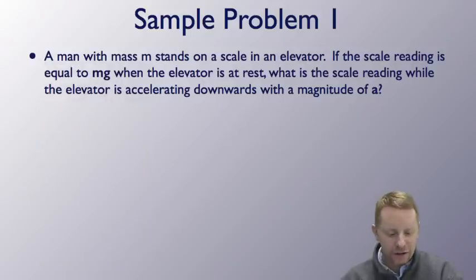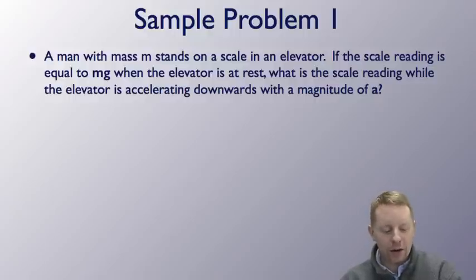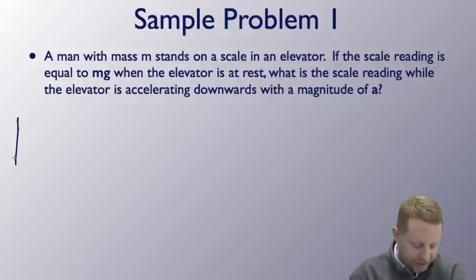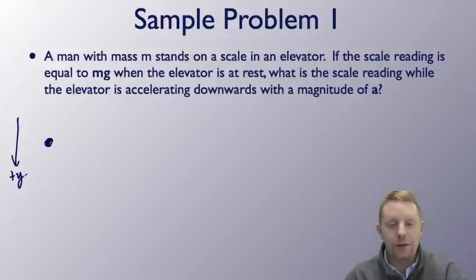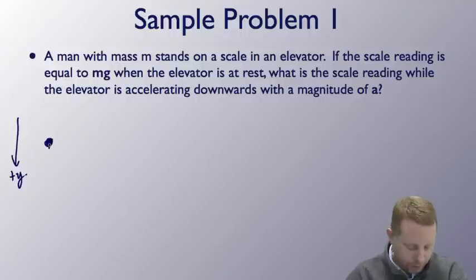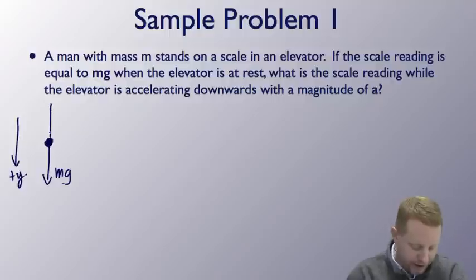Let's take a look at a sample problem. A man with mass m stands on a scale in an elevator. If the scale reading is equal to mg when the elevator is at rest, what is the scale reading while the elevator is accelerating downwards with magnitude a? If it's going to move downwards, let's set up our axes — we'll call down the positive y direction — and draw our free body diagram for the man in the elevator. We have the force of gravity on them, mg down, and the normal force, the force of the scale, back up.